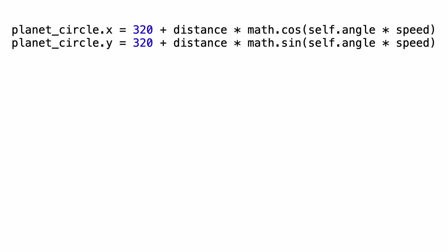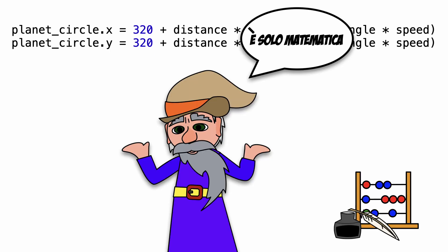To update the planets positions Leo used the cosine and sine functions from the math module. That is how orbits can be calculated.